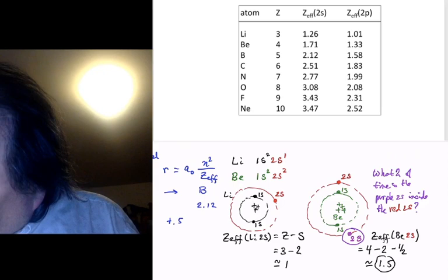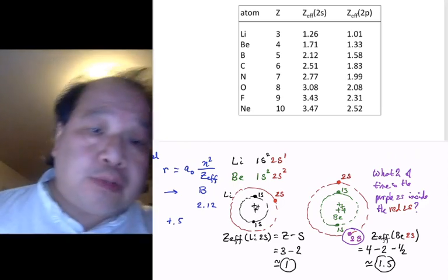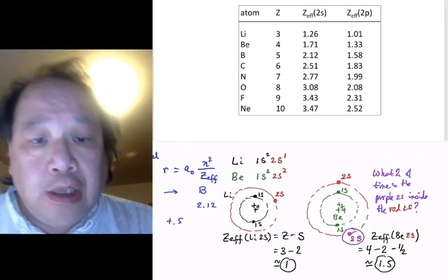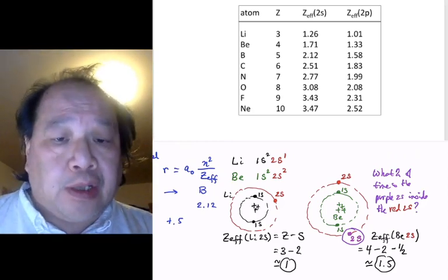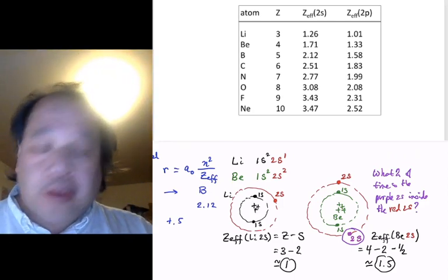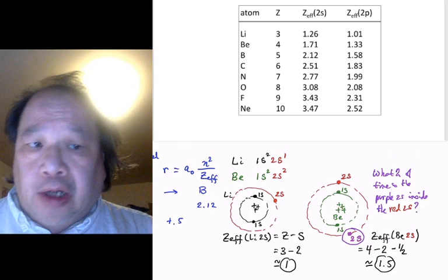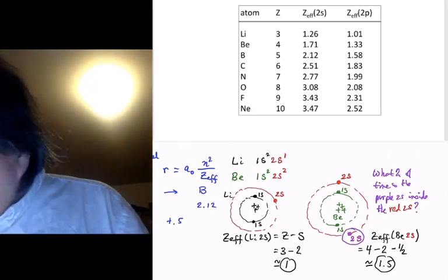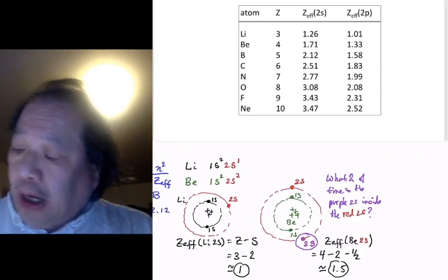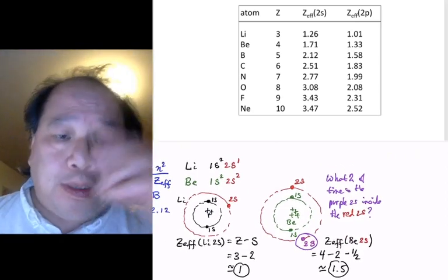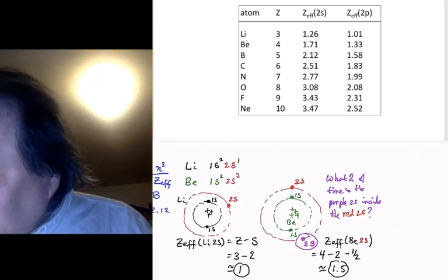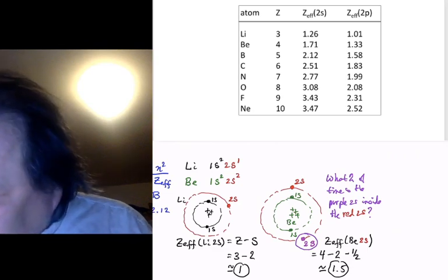We're not dealing here with super accurate numbers because we're just dealing with shell pictures and we're not dealing with D functions. But already we can see that the Z-effective for beryllium is going to be half bigger than lithium. This same argument is going to work as I add more electrons. If I went on to the next element and I added boron, I would have a 2P electron, but the 2P electron is in the second shell and I'd get the same story.